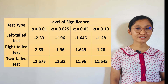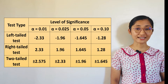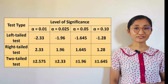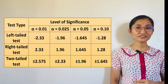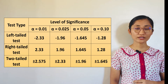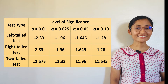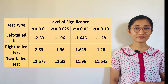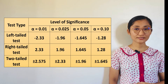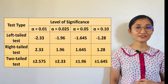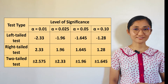Let us consider the table of critical values as shown beside me. We have levels of significance: alpha equals 0.01, 0.025, 0.05, and 0.10. We also have test types: the left-tailed test, right-tailed test, and two-tailed test. As you can see, each of the test types has their corresponding critical values for each of the levels of significance.